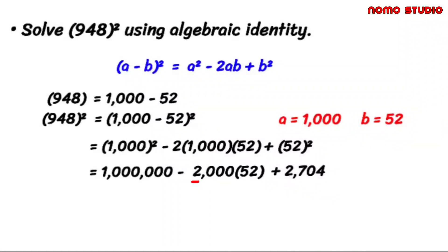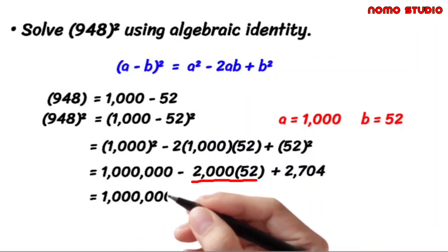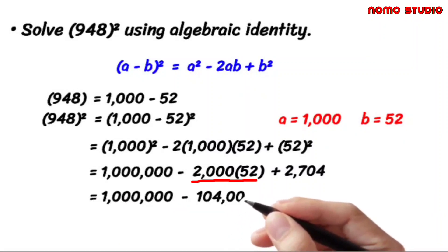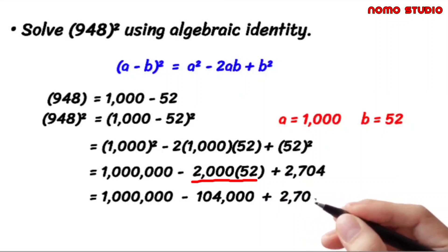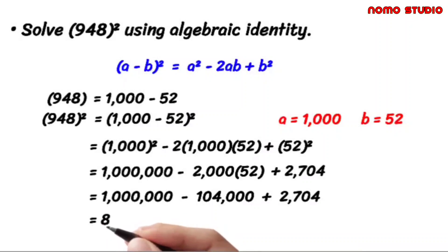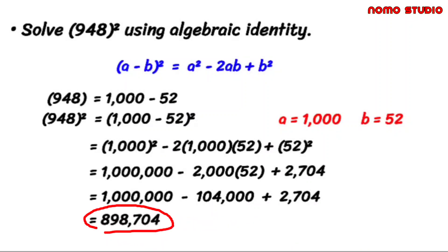2000 times 52 is equal to 104,000. So now we have 1 million minus 104,000 plus 2704, for a total of 898,704. Double check in your calculator.